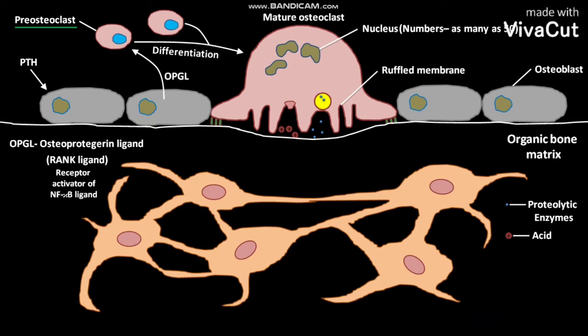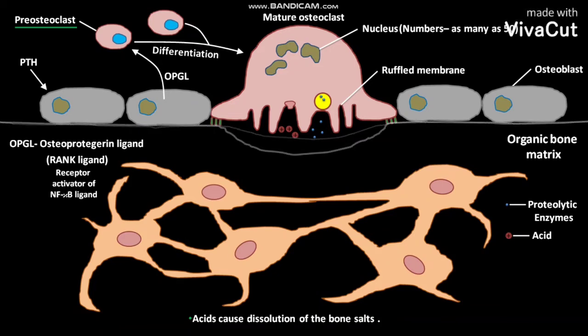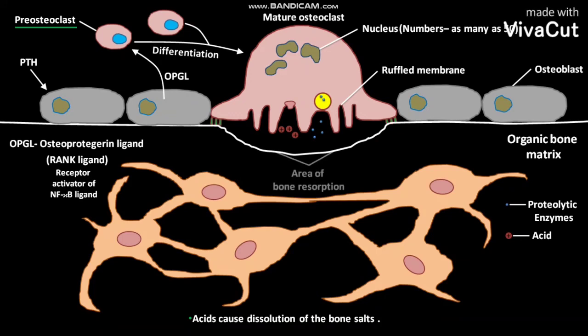The proteolytic enzymes digest or dissolve the organic bone matrix, whereas acids cause dissolution of the bone salts. Due to the combined action of both acids and proteolytic enzymes, the bone is resorbed. This is the area of bone resorption.